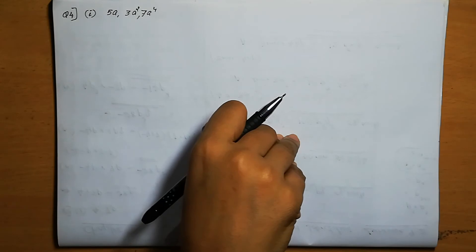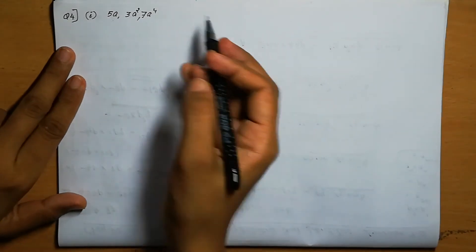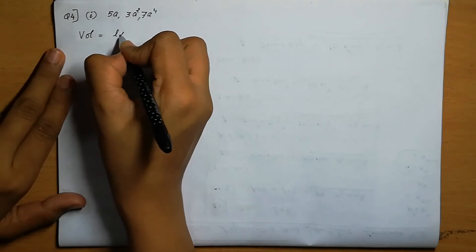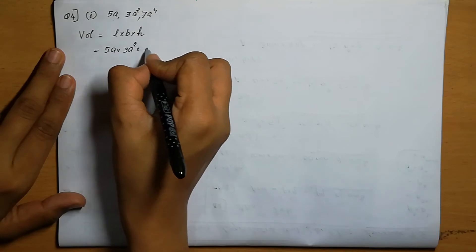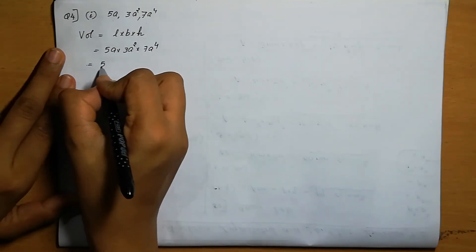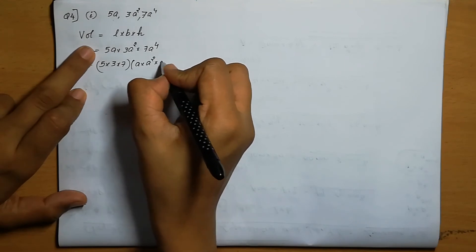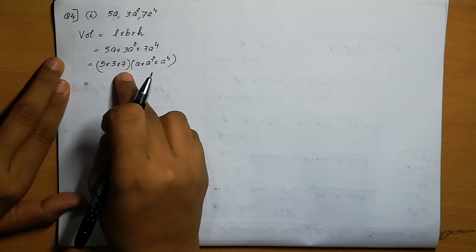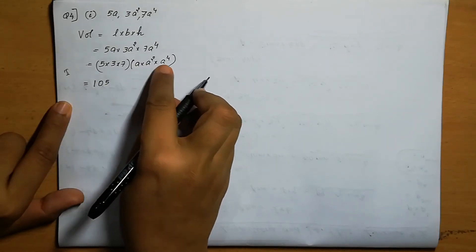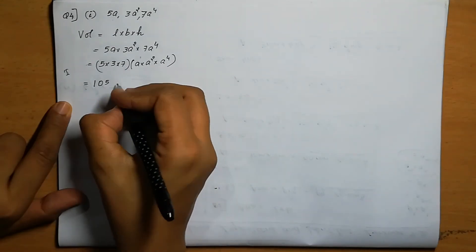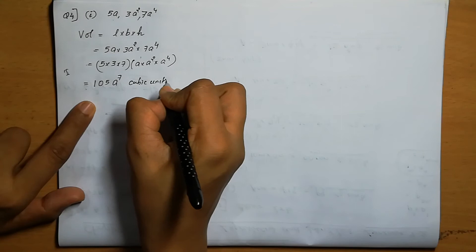Question number 4: Obtain the volume of rectangular boxes with the following length, breadth, height respectively. Volume of the rectangular box is length into breadth into height. Substituting: 5a into 3a square into 7a power 4. Numbers: 5 into 3 is 15, 15 into 7 is 105. Variables: a into a square into a power 4 — powers add: 1 plus 2 plus 4 is 7, giving a power 7. So the volume is 105a power 7 cubic units.